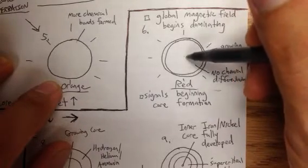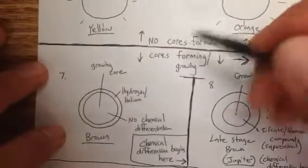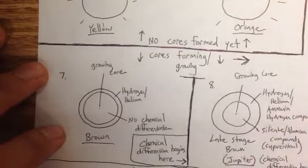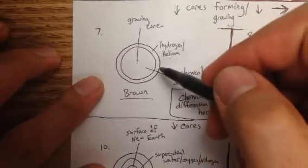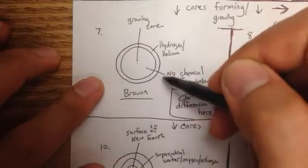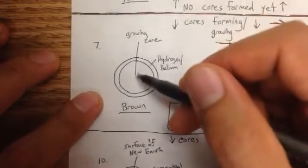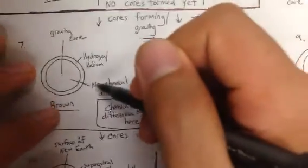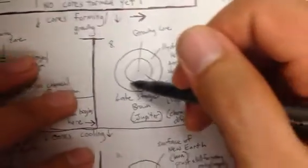After that you have the cores forming and growing, which starts at the red dwarf stage and then goes to brown dwarf. You have a thick helium hydrogen atmosphere still, and the core begins growing still. There's no chemical differentiation after brown dwarf stage.